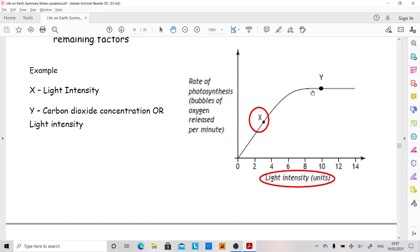When we get to this flattened off bit of the graph, it's got to be one of the other two factors that's limiting factor. We are keeping on increasing the light intensity, but we're getting no improvement in the rate of photosynthesis. So at Y, it's got to either be carbon dioxide concentration or temperature. It's got to be one of the other two.